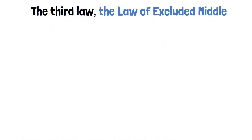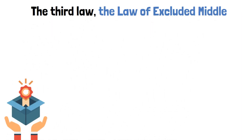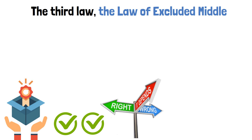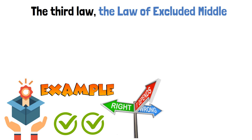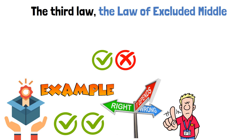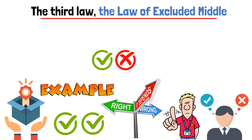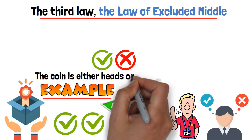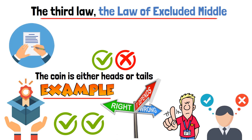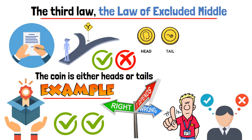The third law, the law of excluded middle, states that for any proposition, either it is true or its negation is true. There is no middle ground or third option. For example, a statement is either true or false — there's no in-between. This law helps us make definitive judgments about the truth or falsity of statements. For example, the coin is either heads or tails. This statement presents a dichotomous choice where the only possibilities are heads or tails, with no middle ground.